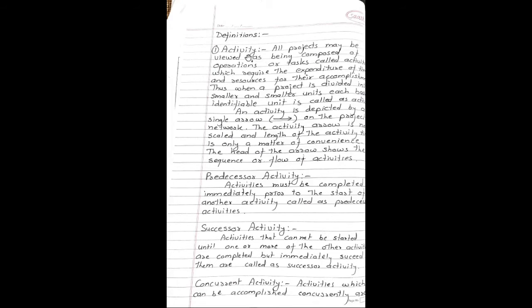Definitions. First definition: Activity. All projects may be viewed as being composed of operations or tasks called activities which require the expenditure of time and resources for their accomplishment. Thus, when a project is divided into smaller and smaller units, each basic identifiable unit is called as activity. An activity is depicted by a single arrow on the project network. The activity arrow is not scaled and length of the activity time is only a matter of convenience. The head of the arrows shows the sequence or flow of the activities.